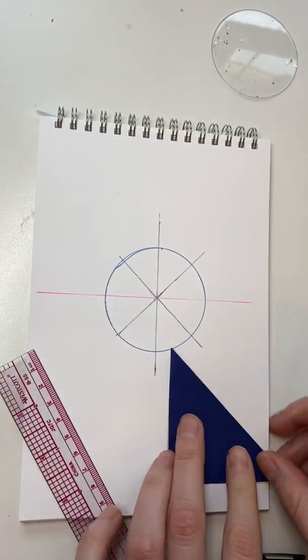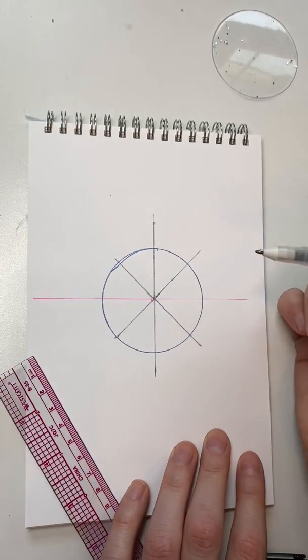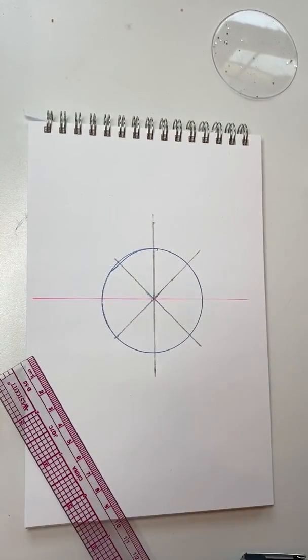And then you have divided your circle into eight equal parts. It's not perfect, but it'll do for our purposes.